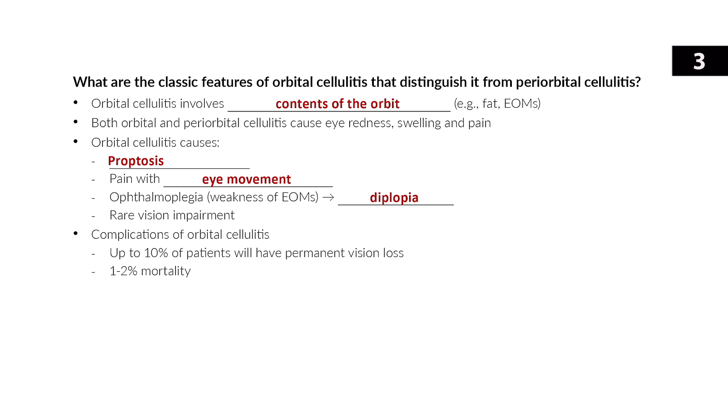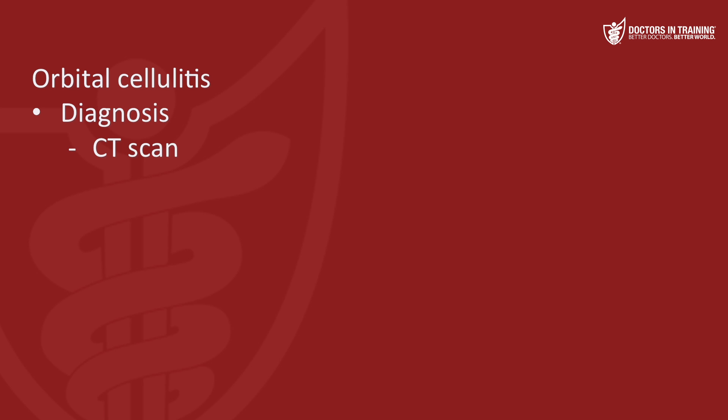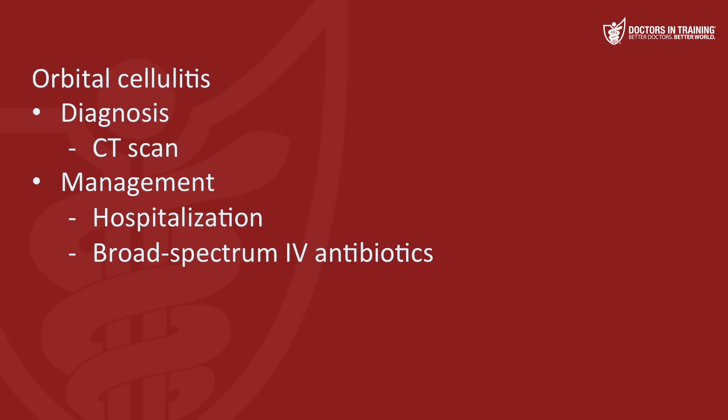Orbital cellulitis is potentially very dangerous, so we diagnose it with a CT scan and treatment includes hospitalization, broad-spectrum IV antibiotics like vancomycin plus a third-generation cephalosporin like ceftriaxone or an extended-spectrum penicillin like ampicillin-sulbactam or piperacillin-tazobactam. Staph and strep are the most common organisms but anaerobes can also be a problem, so metronidazole is sometimes added. You also want to consult an ophthalmologist in case surgical drainage is required.